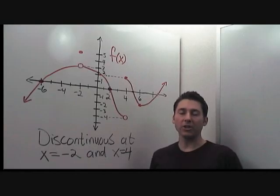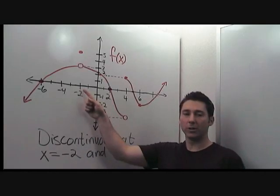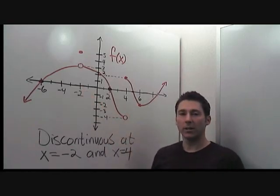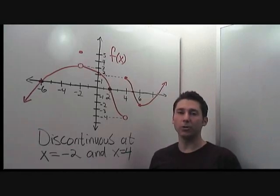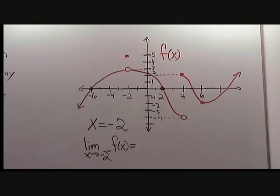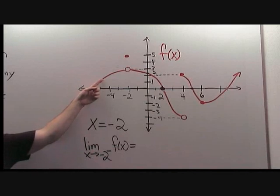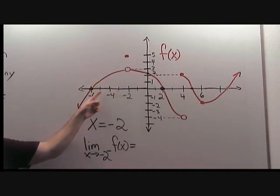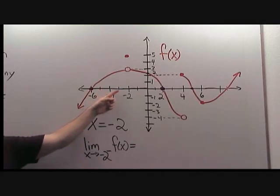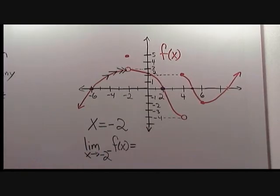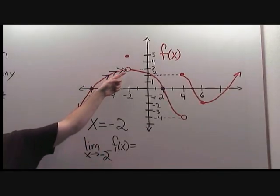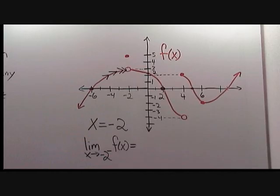We just determined that the function f is not continuous at x equals negative 2 and at x equals 4. Let's evaluate the left and right limits of f at those two locations. At x equals negative 2, we need to compute the limit as x approaches negative 2 from the left of f of x. To do this, we look to the graph and approach x equals negative 2 with x coordinates from the left, walking along the graph. As x approaches negative 2, we arrive at this hole. The height is y equals 3, so the limit as x approaches negative 2 from the left of f of x is equal to 3.